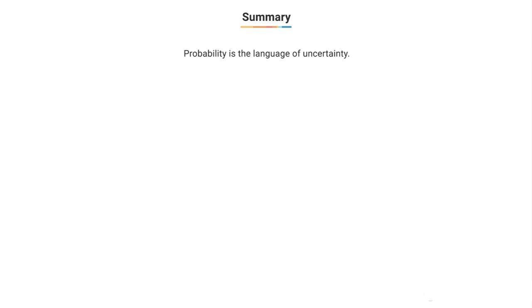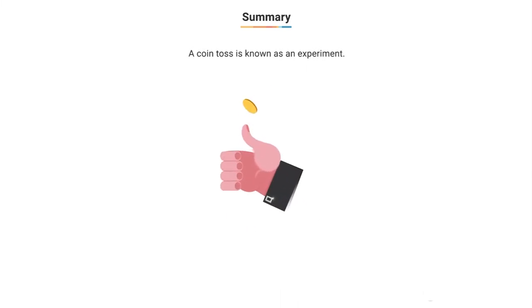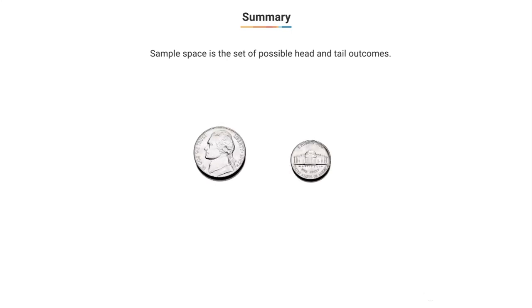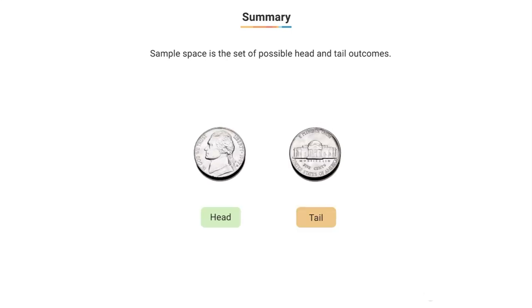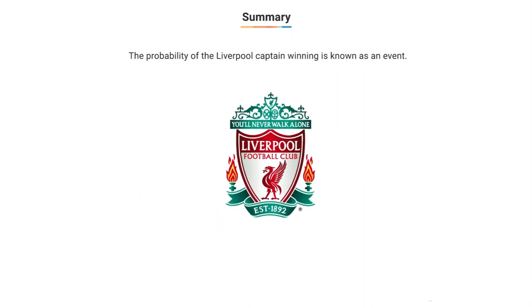Thus, probability is a language of uncertainty. The coin toss is known as an experiment. The set of possible outcomes — heads and tails — is known as the sample space, mathematically represented as Ω = {heads, tails}. The probability of the Liverpool captain winning is known as the event.